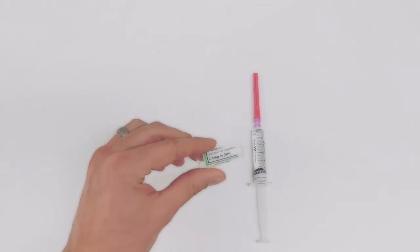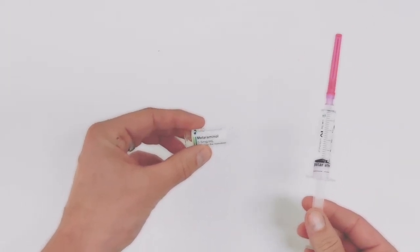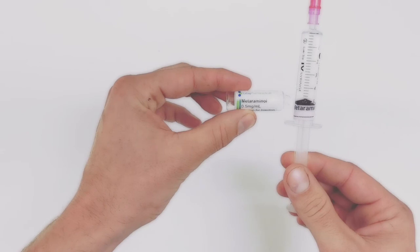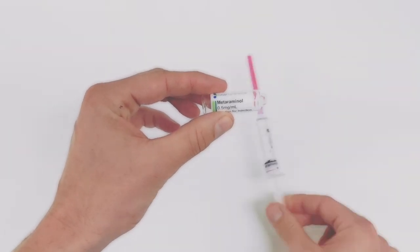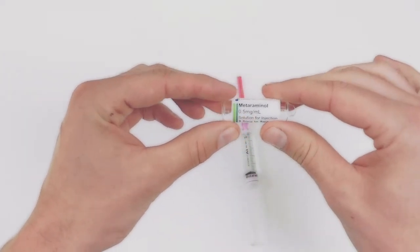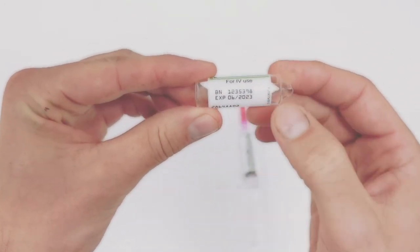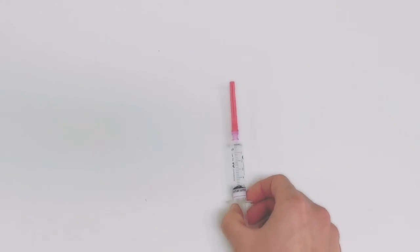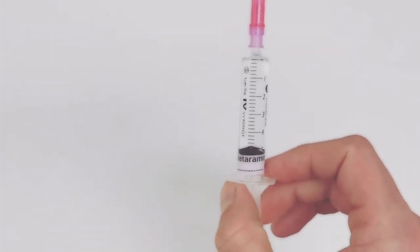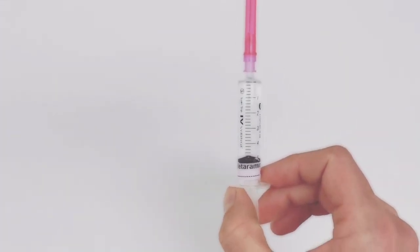Now before I throw away the vial—and this is why I label the syringe beforehand—I can directly compare: metaramenol, metaramenol. I'm expecting 0.5 milligrams per ml as a concentration, and then you check the expiry date. Now you can throw this in the bin knowing you have the right dose of the right drug in this syringe and it's correctly labeled.